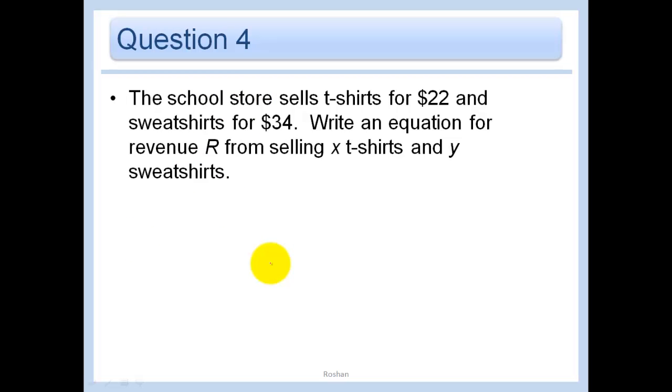The school store sells t-shirts for $22 and sweatshirts for $34. Write an equation for revenue from selling X t-shirts and Y sweatshirts. We know what X and Y are. The revenue is just $22 that each t-shirt costs times how many t-shirts we're selling, which are X, plus $34 times Y, which is the number of sweatshirts we're selling. That's how much money we take in, our revenue.